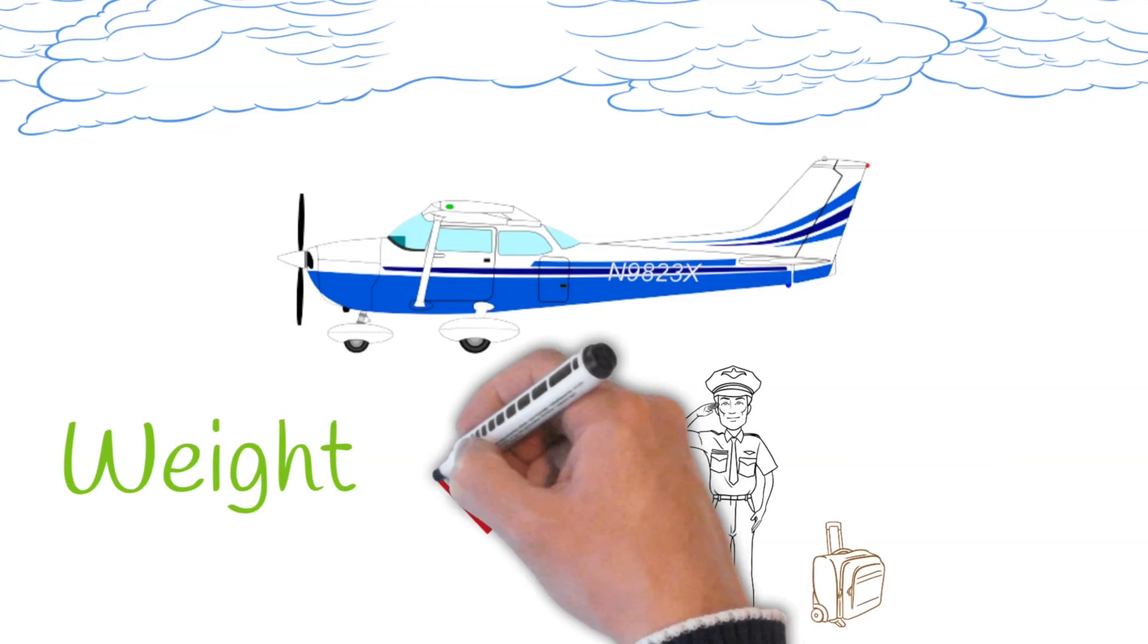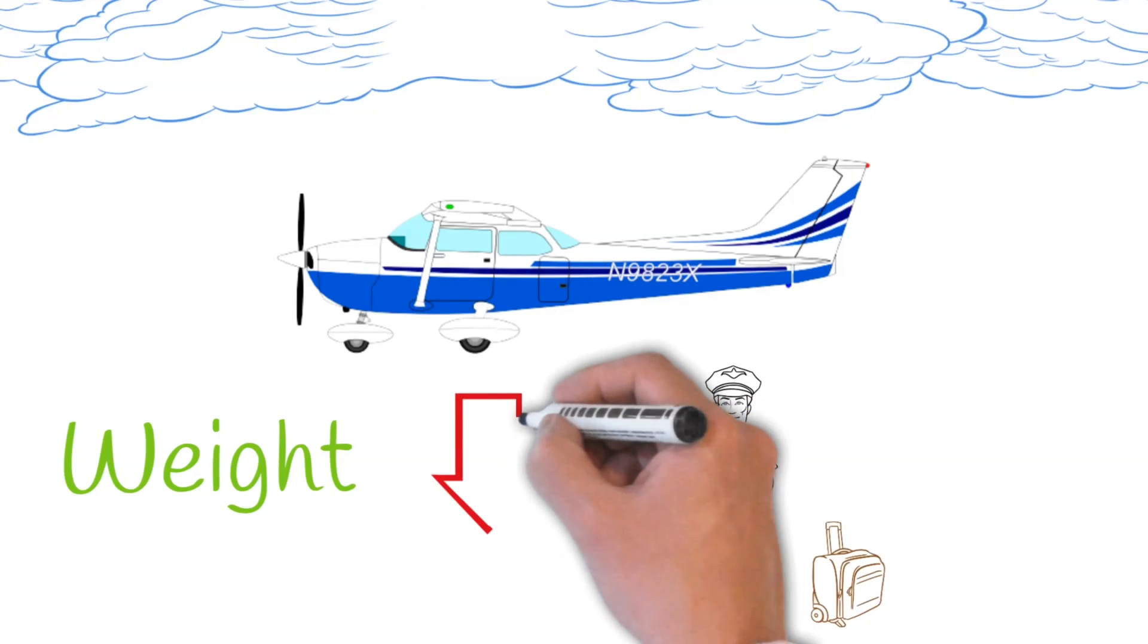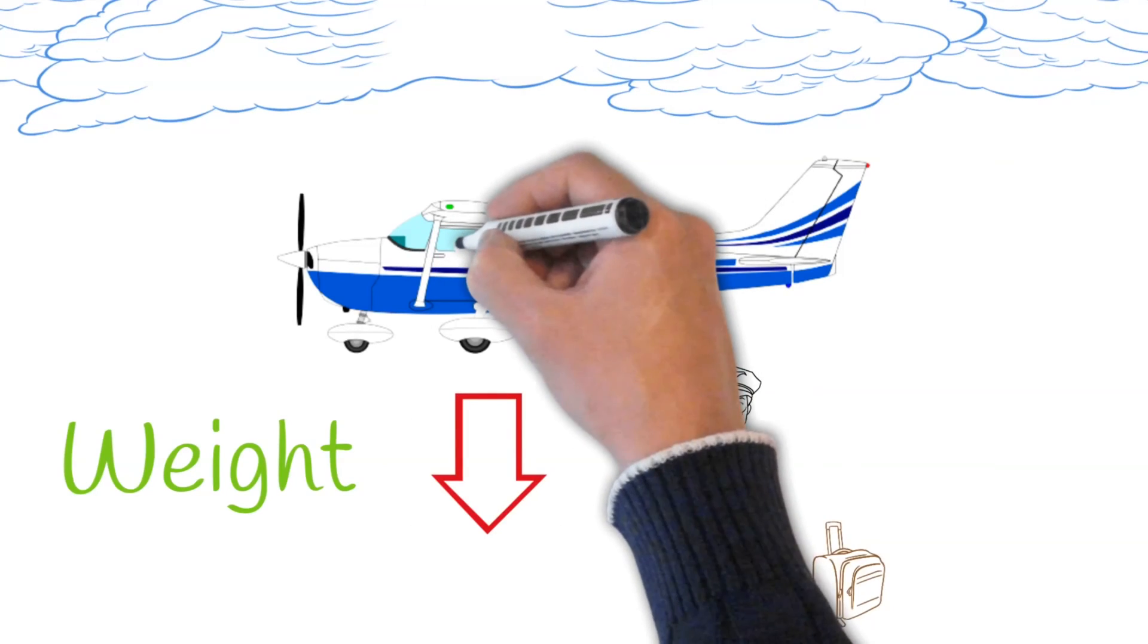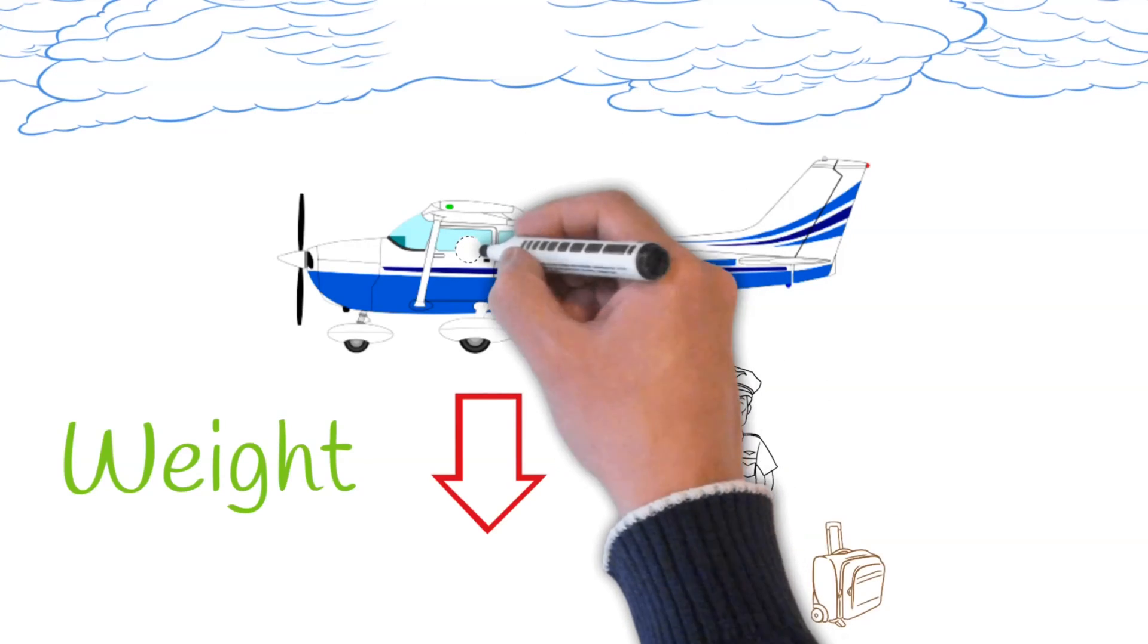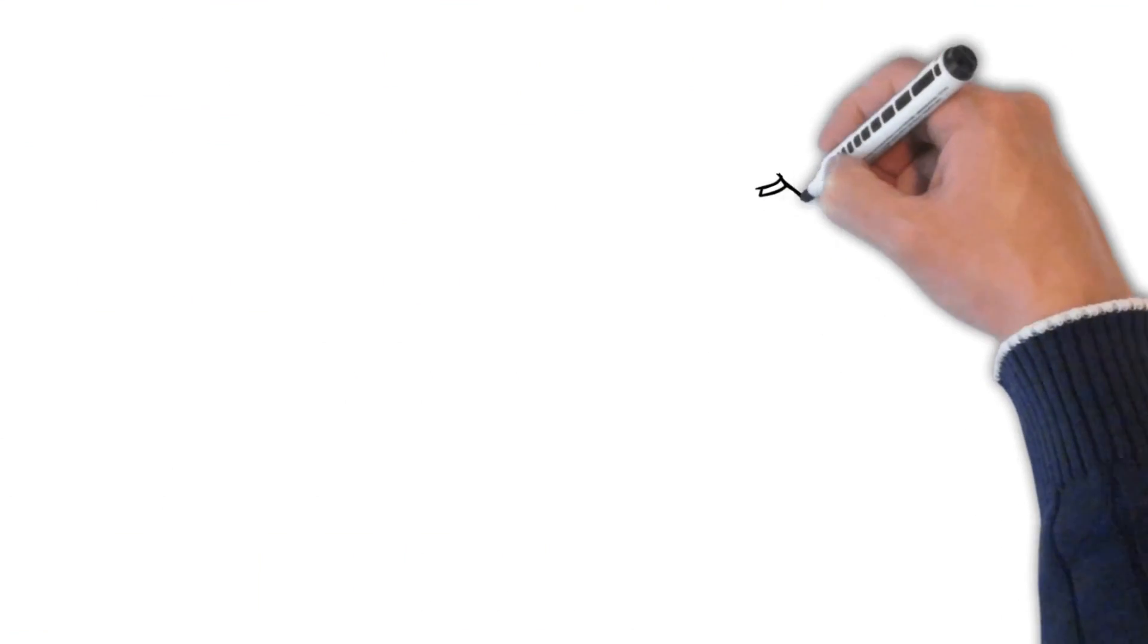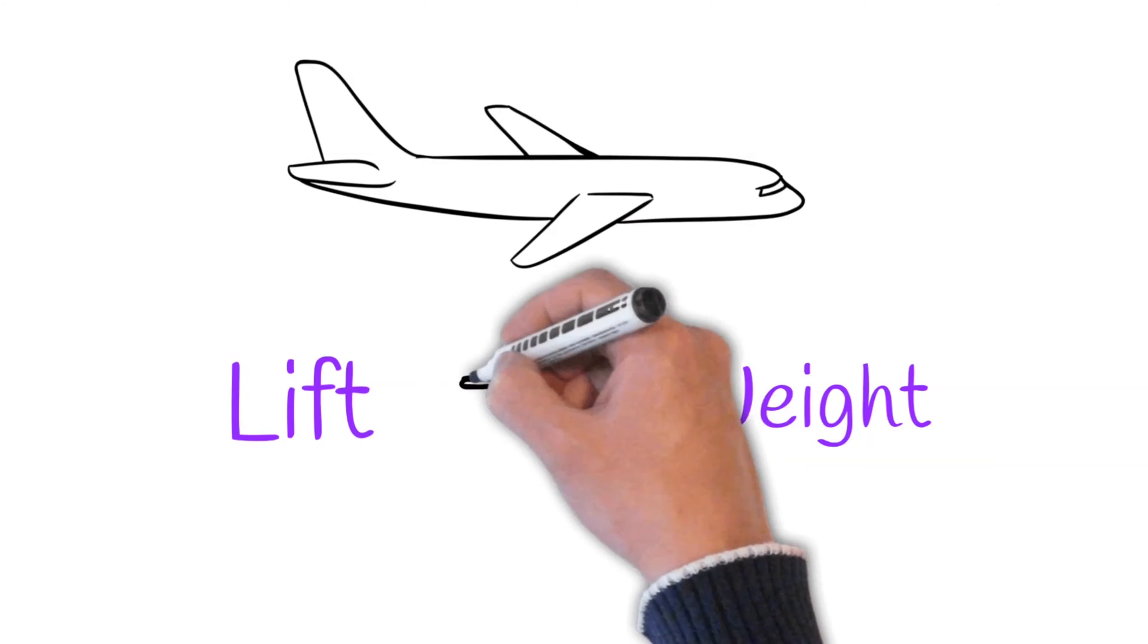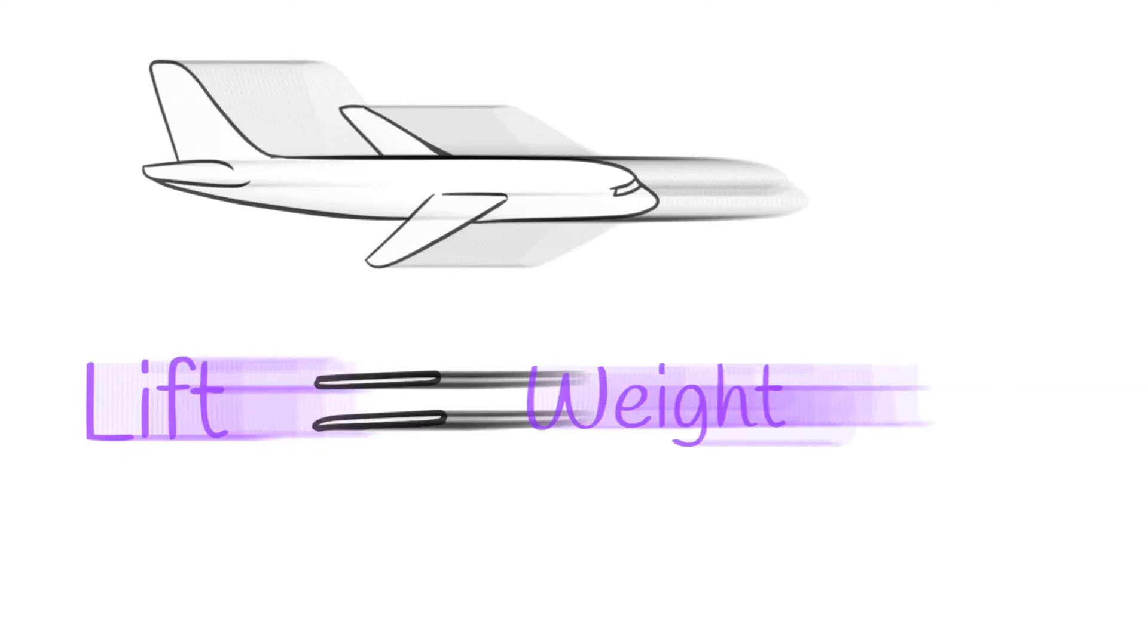Weight also opposes lift and acts vertically downward through the aircraft's center of gravity. That's a point at which an airplane would balance if you were able to hang it from a string. In steady, unaccelerated flight, lift and weight are both equal.